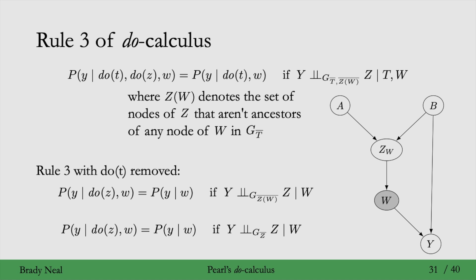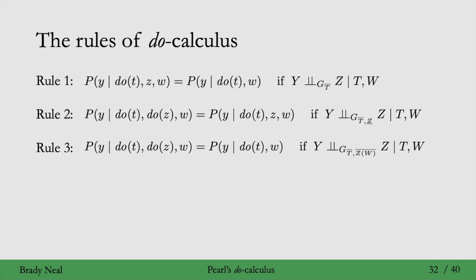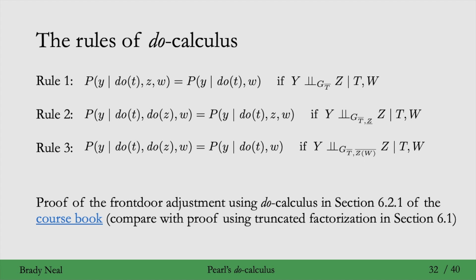That's why this criterion uses only the nodes in z that are not ancestors of w. This is the more general version of rule three, when we add in do(t). And that's the intuition for why rule three of do-calculus is true — it's a tricky one, so you may want to pause and think more to cement that intuition. We use these rules to identify causal quantities: we take a causal estimate and remove do operators from it, turning it into a statistical estimate. As an example, we give a proof of the front door adjustment using the rules of do-calculus in section 6.2.1 of the course book, which you can compare against the truncated factorization proof in section 6.1.